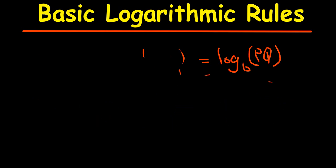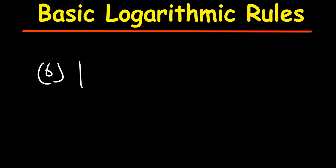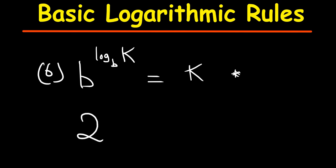Another special rule — number 6 — states that if I have B raised to the power log base B of K, this will just be the same as K. For example, 2 raised to the power log base 2 of 7 equals 7, because the base 2 and the base in the log are the same.